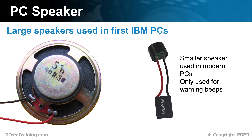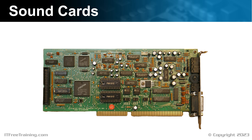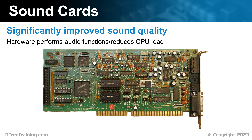PC speakers provide basic sound; however, they were limited to what they could produce and put an extra load on the CPU. To overcome these problems, sound cards were developed. There have been many sound cards released over the years. Shown here is the Sound Blaster Pro, which was popular back in the early 90s. Sound cards like these significantly improved the sound quality over the PC speaker. The other advantage was that the hardware on the card performed audio functions, which reduced the load on the CPU. The sound card could provide functions like stereo, sound mixing, and also play music. These cards became very popular as they addressed the limitations of the PC speaker and provided superior sound. However, they would slowly start to disappear.